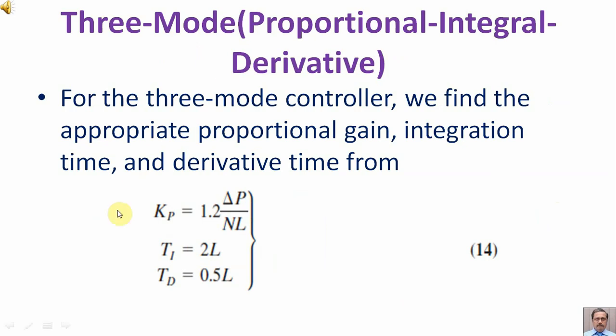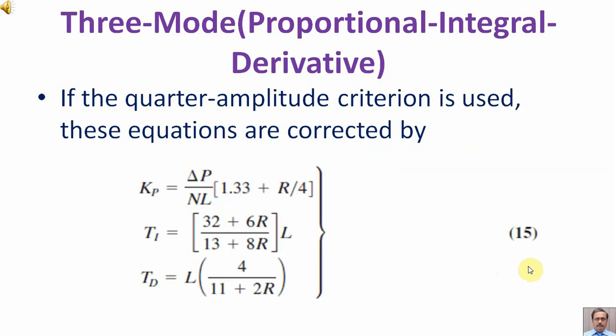For the three mode controller, we find the appropriate proportional gain, integration time and derivative time from equation 14 as shown. If the quarter amplitude criteria is used, these equations are corrected as shown in equation 15.